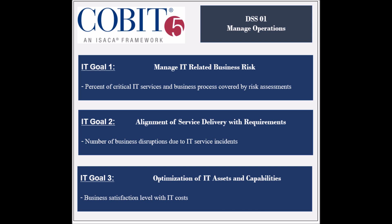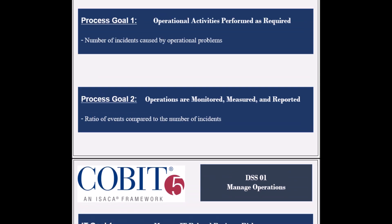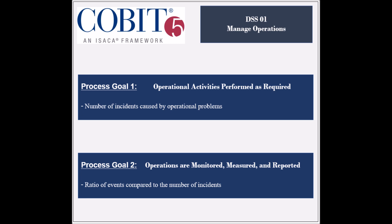The third supported goal is to ensure the optimization of IT assets and capabilities, measured by the frequency of capability maturity assessments and by the business satisfaction level with IT costs. The process has two process goals. The first is to perform the operational activities as required and planned, measured by the number of incidents caused by operational problems. The second goal is to monitor, measure, and report operational activities, measured by the percent of operational events to the number of incidents.